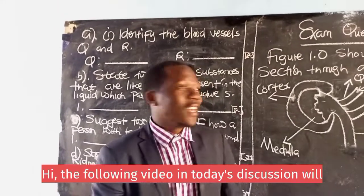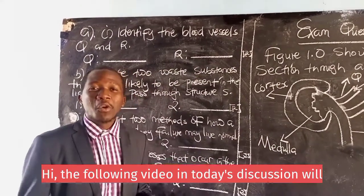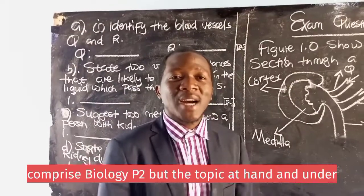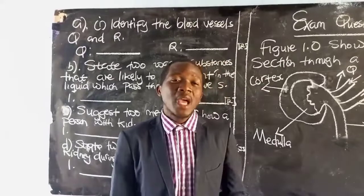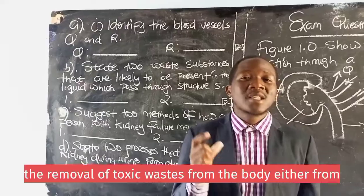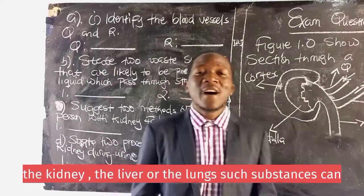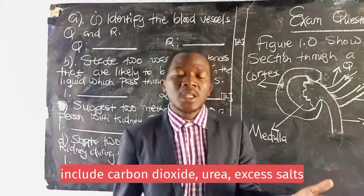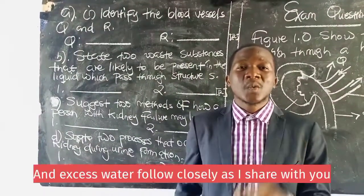The following video in today's discussion will comprise biology part two, and the topic under discussion is excretion. When we talk about excretion, we are talking about the removal of toxic wastes from the body, either from the kidney, the liver, or the lungs. Such substances can include carbon dioxide, urea, excess salts, and excess water.